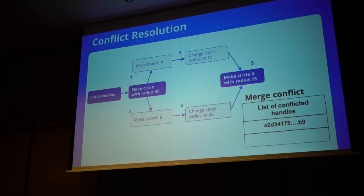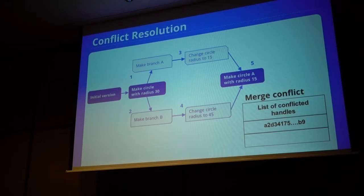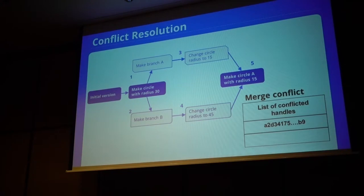It is also possible to have some conflicts. For example, we have an initial version of the drawing with a circle of radius 30. Then two branches are created from this revision — one changes the radius to 15, and another changes it to 45. When you try to merge, we have a special UI that shows conflicted entities on the drawing so you can choose to apply your changes or their changes. There is also a manual mode, still under development, where you can choose particular entities.